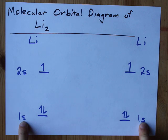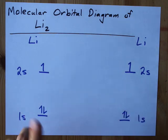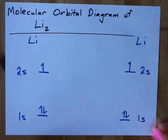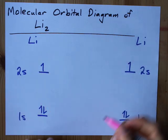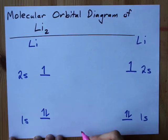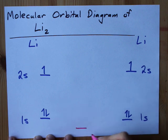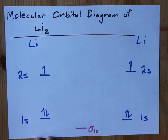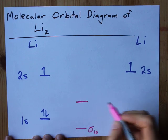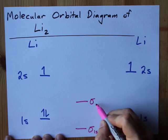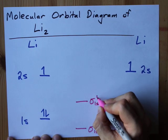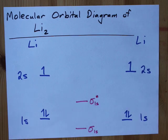When you combine a 1s and a 1s together, you can end up with two molecular orbitals. One at a lower energy — it is called a sigma 1s bonding orbital — and you make a corresponding anti-bonding orbital in case their symmetries were opposite. We like to put a star right up there for that.